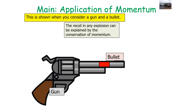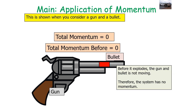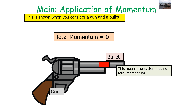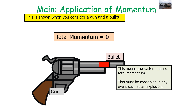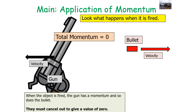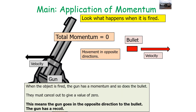An application of this is a gun and a bullet. The recoil of a gun can be explained by conservation of momentum. Before the gun fires, the gun and bullet are not moving, so the system has no momentum. After firing, the gun has a momentum and so does the bullet, but they cancel out to give zero. They must be going in opposite directions — the gun goes in the opposite direction to the bullet. So we say the gun has a recoil.